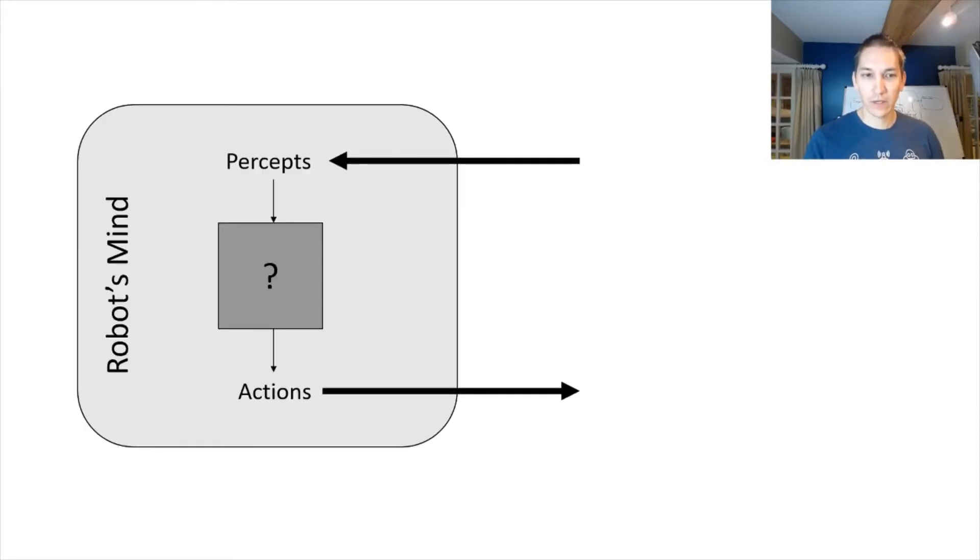Let's think about the key part. The robot's mind takes in these signals called percepts and then outputs these actions. And this middle box here is where all the planning happens. This is also known as the sense, plan, act paradigm. The sensing component is the top arrow here. The planning is the big question mark, and then acting is the bottom arrow outputting signals from the robot's mind.